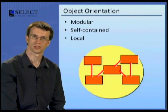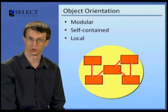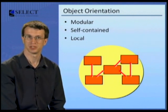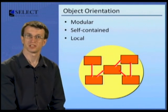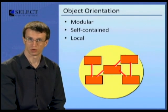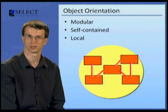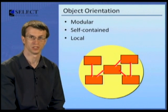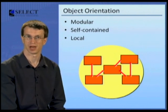In contrast, object orientation, or OO for short, provides a way of representing the elements, behaviours, and data of the business world as objects that interact with one another in support of a business function or process. The modular and self-contained nature of object orientation helps to localise the impact of change across the system.